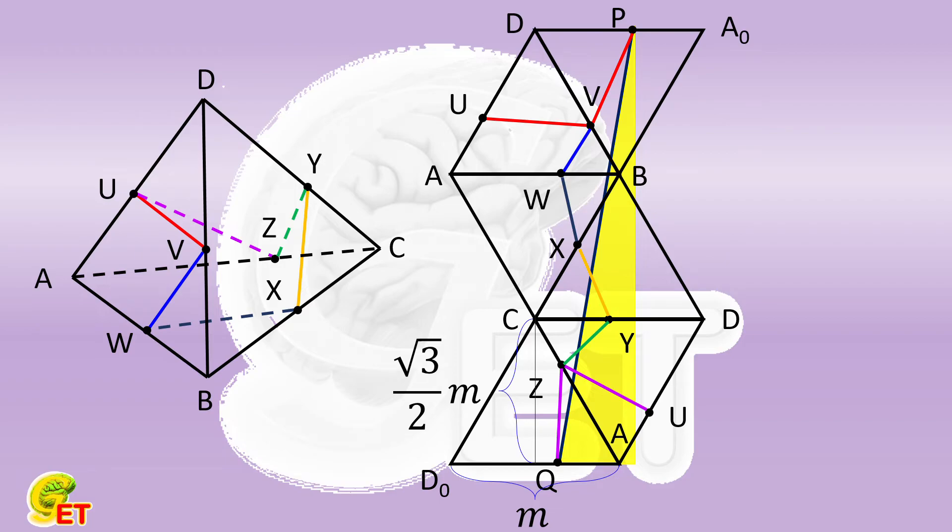In the vertical direction, the distance between P and Q is the height of 3 equilateral triangles. Which is therefore equal to 3 times the square root of 3 times M over 2.